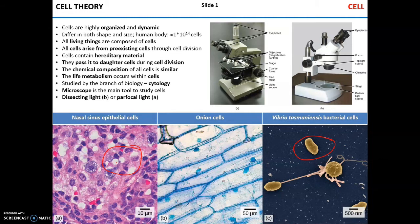The human body contains about 100 trillion cells, and by definition all living organisms are composed of cells. Anything that is not composed of cells is not living. The fundamental postulate of cell theory is that all cells arise from other cells via cell division.